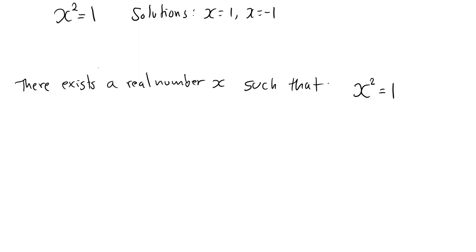When we say there exists, we always mean there is at least one. We do not mean that there exists only one. This is a true statement since there actually exists two real numbers, minus 1 and plus 1, where x squared is equal to 1.